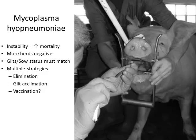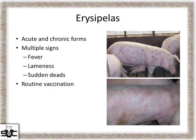Mycoplasma — you might not get rid of all of it, but that's the goal. We know that instability — when gilts don't match the sow herd, such as negative gilts entering a positive sow herd — leads to increased mortality especially in young parity animals. We're getting more negative herds, which helps, but the big message is that sows and gilts need to match status. If we're entering negative gilts into a positive farm, we really need to get those gilts in at a young enough age and confirm they go positive so we don't have that instability.